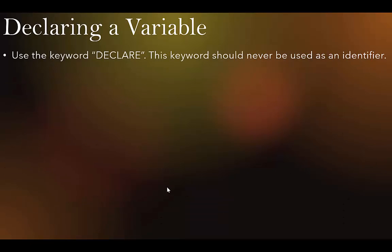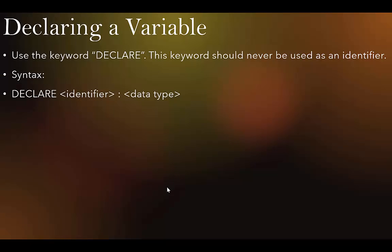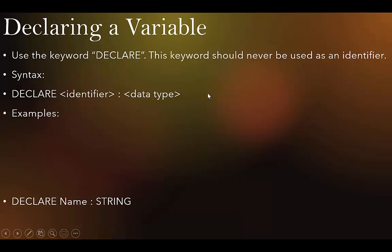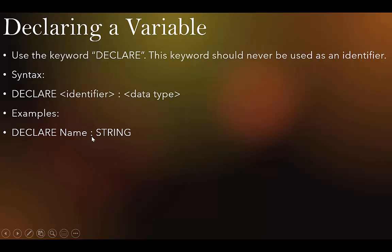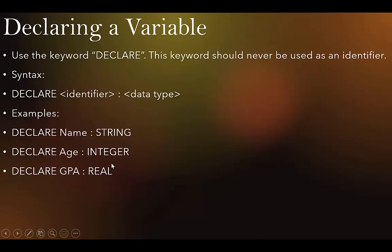Declaring a variable: use the keyword DECLARE. This keyword should never be used as an identifier because it is a keyword. The syntax is: DECLARE, the identifier name, colon, then the data type. For example: DECLARE Name : STRING, DECLARE Age : INTEGER, DECLARE GPA : REAL. Those are the ways you simply declare a variable.